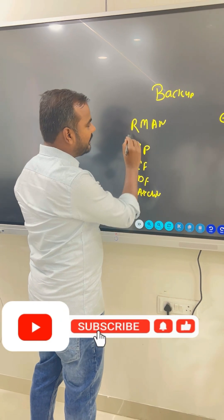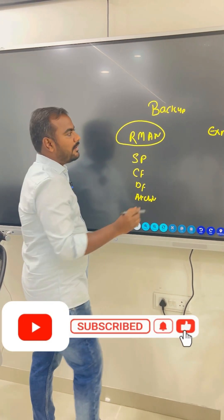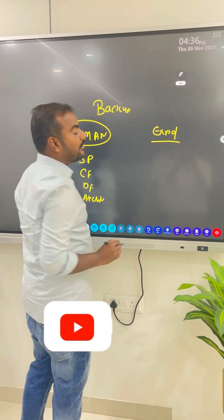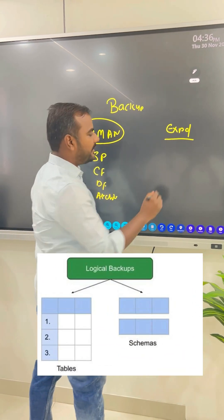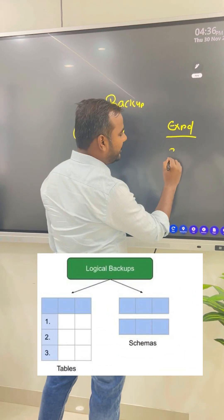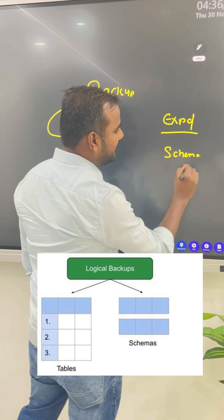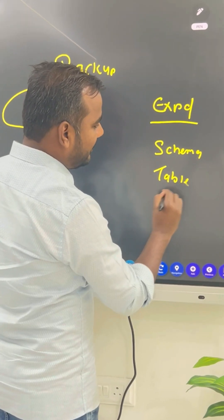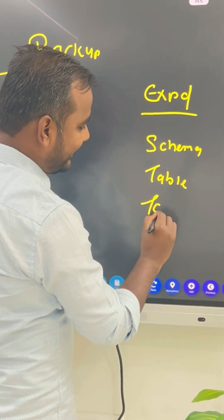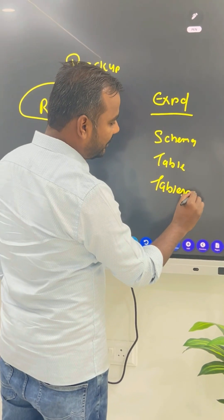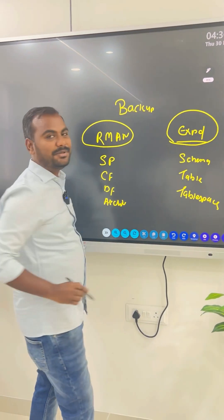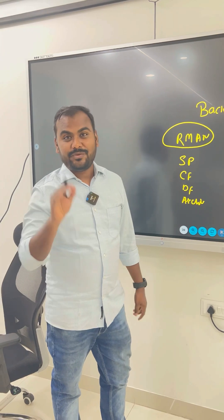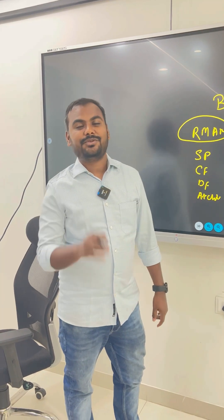When you want to take the backup of logical things like your schema, tables, and tablespaces, we can take it with the help of EXPDP. Both utilities are very important if you want to crack an Oracle DBA interview.